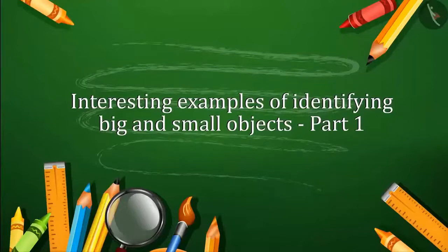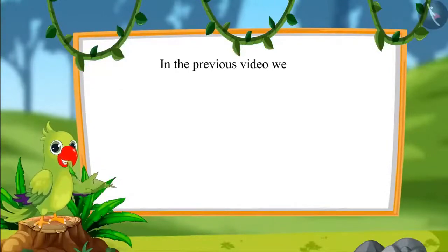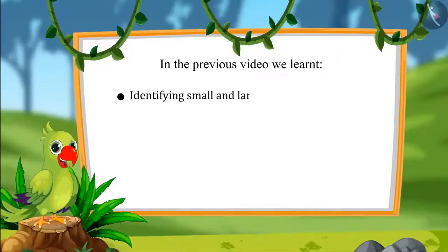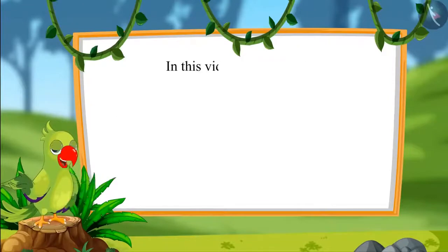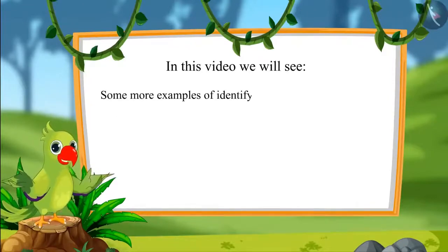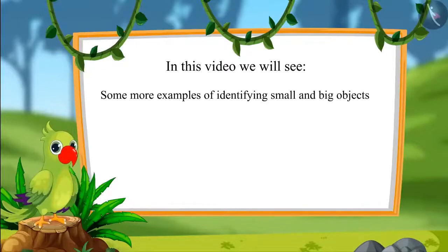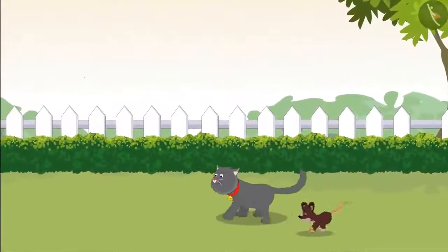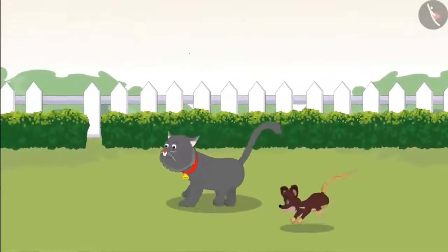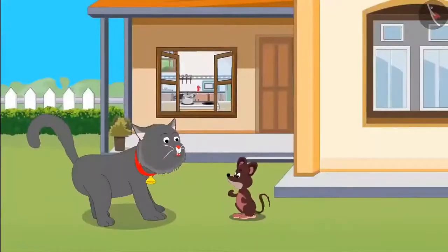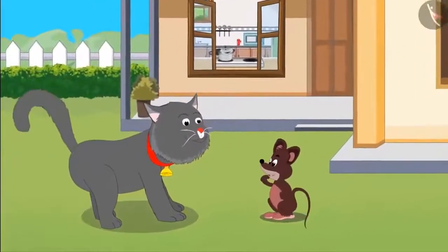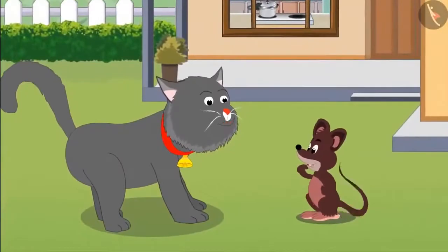Interesting examples of identifying big and small objects, part 1. Hello children. In the previous video we learned identifying small and large objects and identifying the smallest and largest objects. In this video we will see some more examples. Today Dinu Rat and Minu Cat are playing together — they got hungry while playing. 'Let's eat something, Dinu.' 'Yes Minu, I am very hungry too. Let's go to the kitchen — there we will find some bread to eat.'